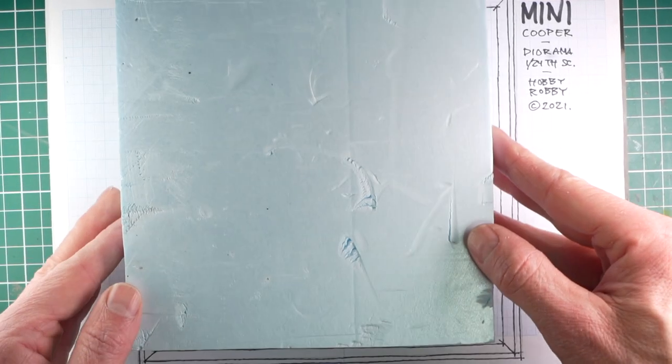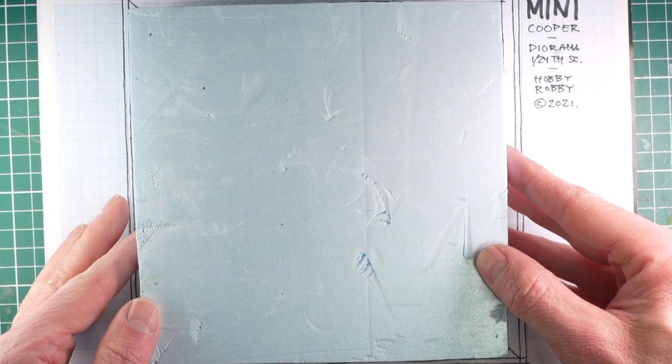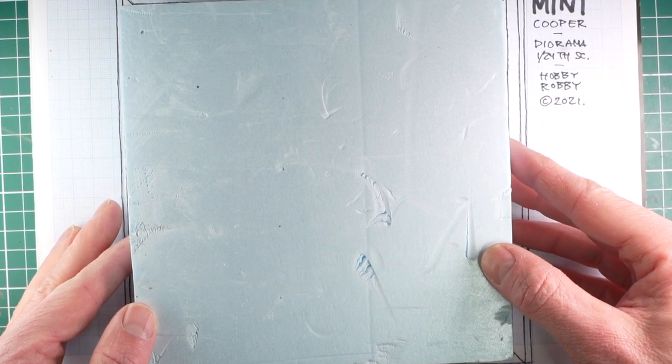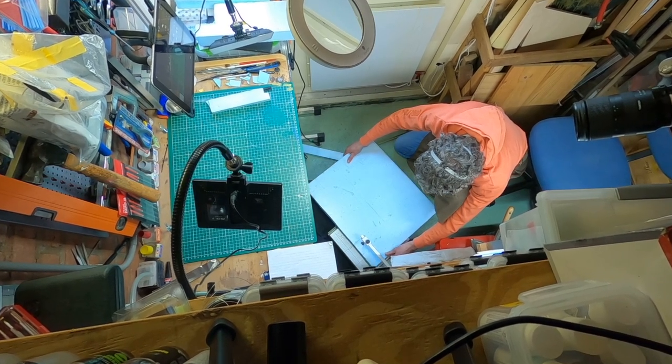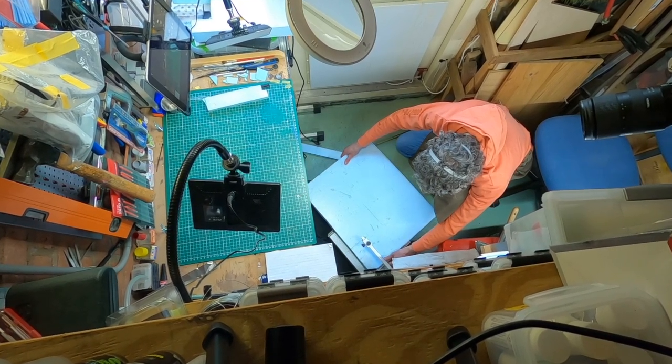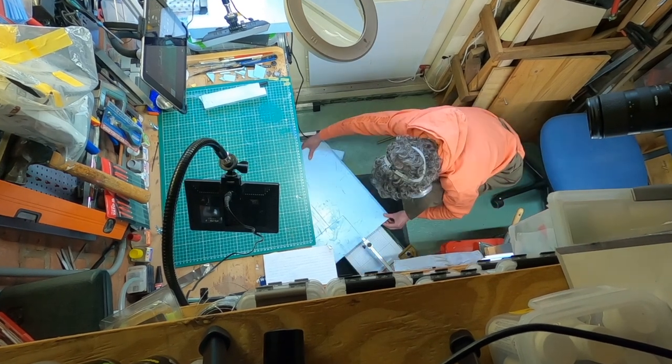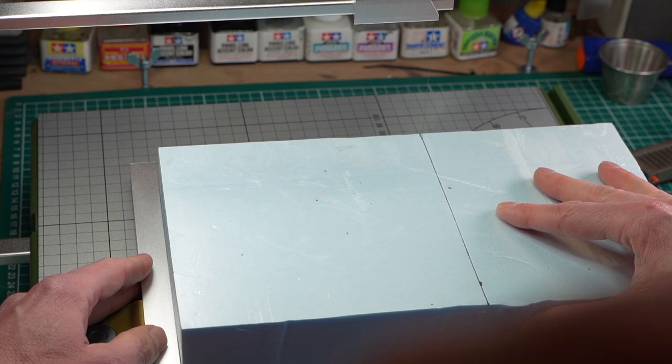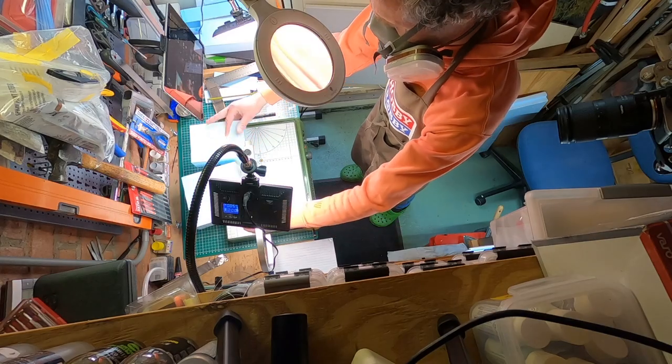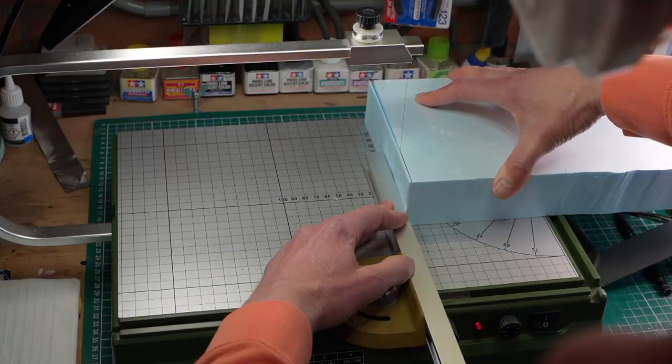As a base material I use polyurethane or PU. That's an insulation material that can be bought at DIY shops or in well equipped hobby shops. This material is cut best on a thermocutter, like this Proxxon Thermocut. I cut the edges smooth with more precision.